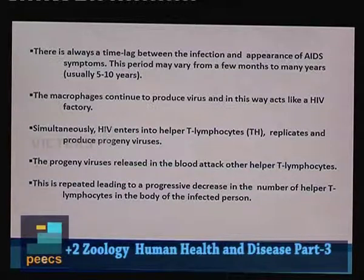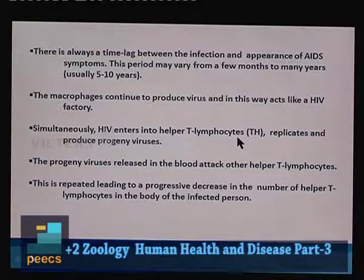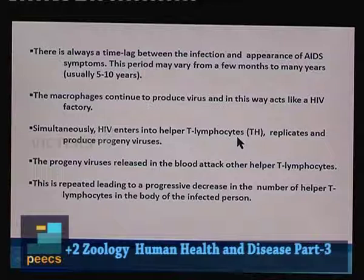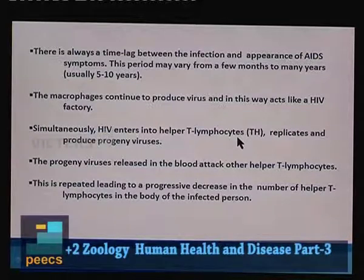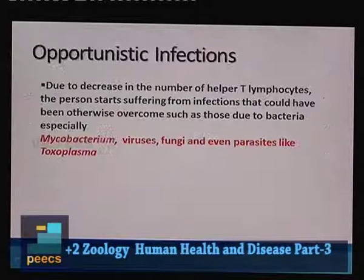Macrophages continue to produce virus and act as a reservoir. Simultaneously, HIV also enters helper T lymphocytes, which are very important in immune responses — helper T cells activate B cells to produce antibodies. When HIV infects helper T cells, it affects the immune response of the individual because the number of helper T cells progressively decreases. The progeny viruses released into the blood attack more and more helper T lymphocytes, leading to a progressive decrease in T lymphocyte numbers. This opens the way for opportunistic infections.